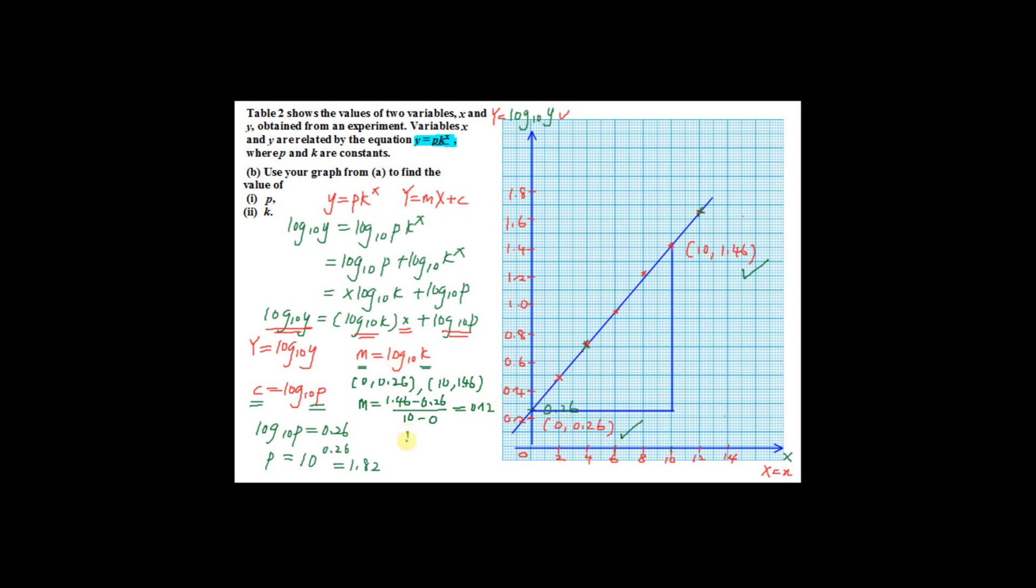Therefore, my log 10 k equals 0.12. Therefore, k equals shift log of 0.12, that is 10 to the power 0.12. This will give you an answer for k, 1.318.